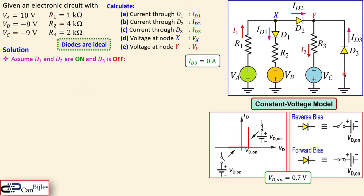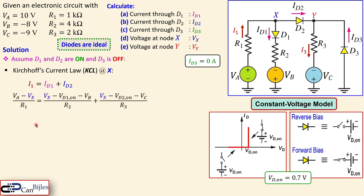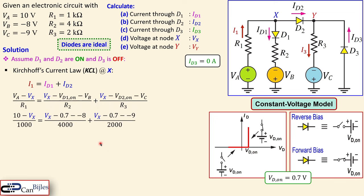With D3 off, that branch is an open circuit. We again apply KCL at node X: I1 equals ID1 plus ID2. We can now set up equations using Ohm's law, because each branch has a resistor, and since this is an open circuit the rightmost branch is complete from node X all the way to ground. So I set up this equation.